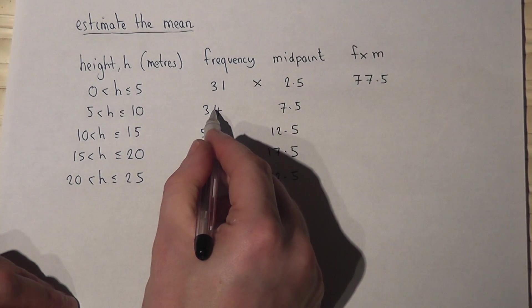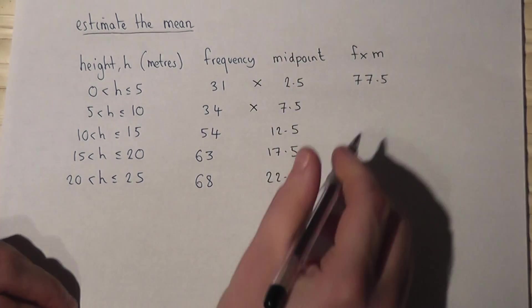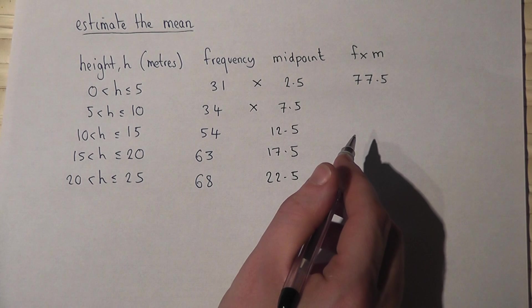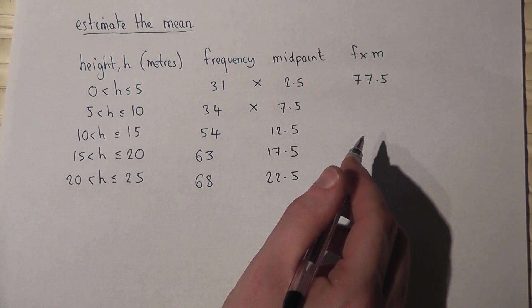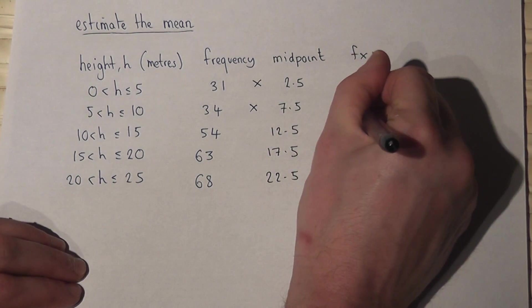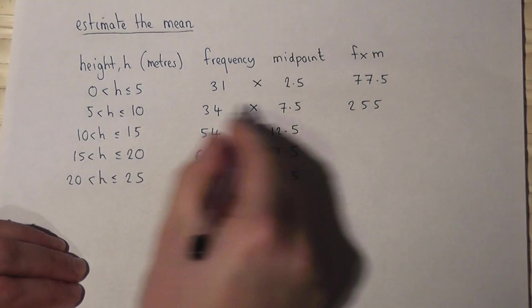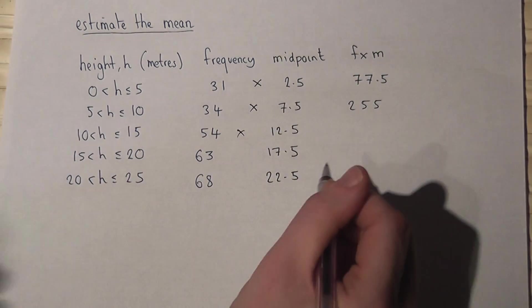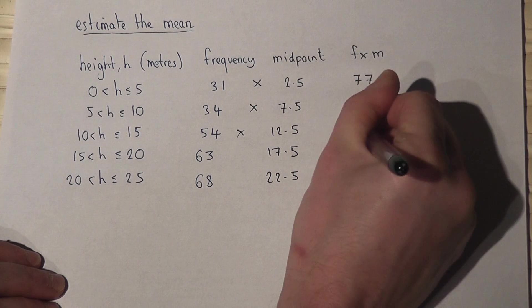Here there are 34 trees all around 7.5 metres. So I'll do 34 times 7.5, which works out at 255 metres. That's their combined height. I've got 54 lots of 12.5, which is 675 metres.